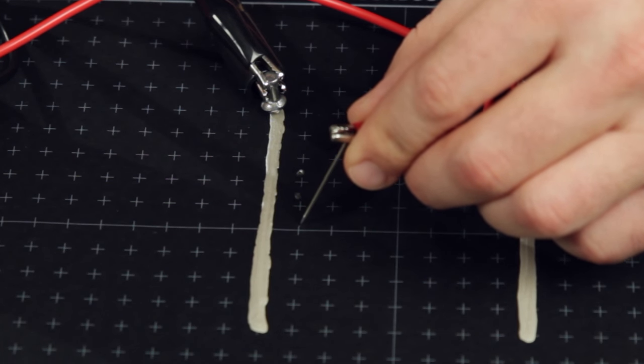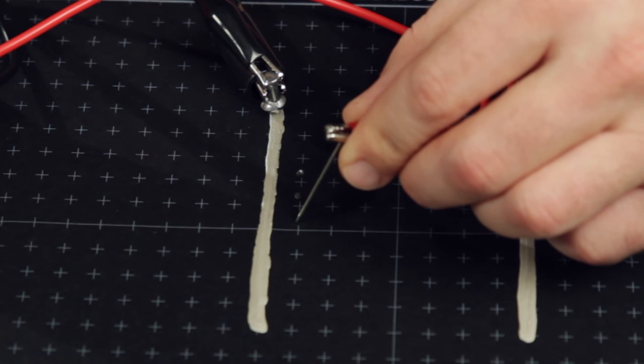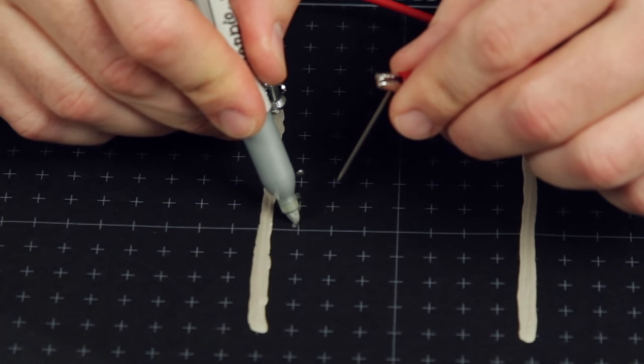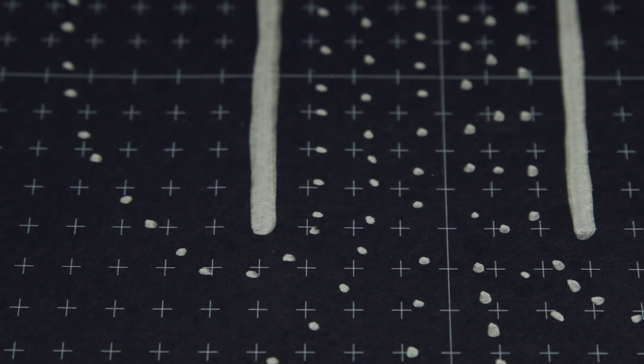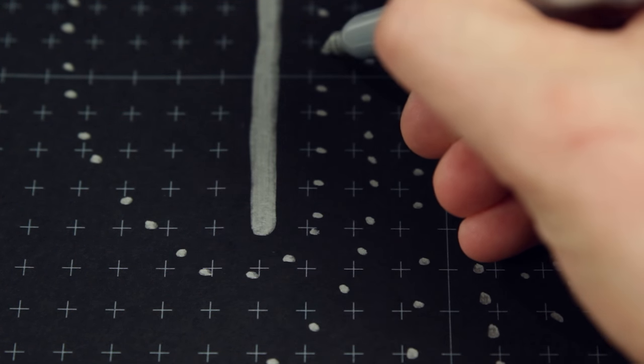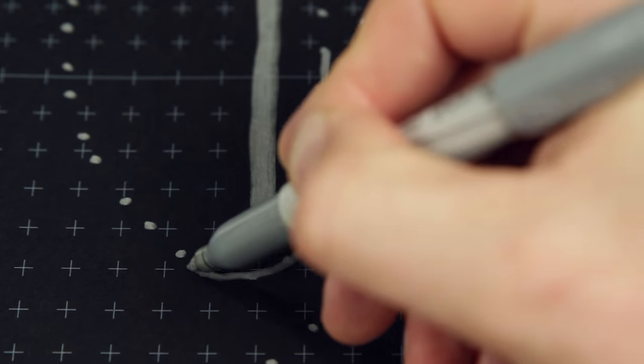Continue to move the probe and identify other locations on the paper with the same potential difference. Mark these points as well. After a sufficient number of points have been marked, connect them to produce an equipotential line.